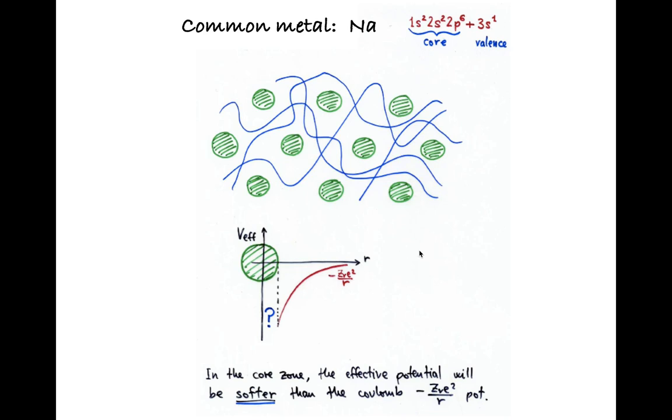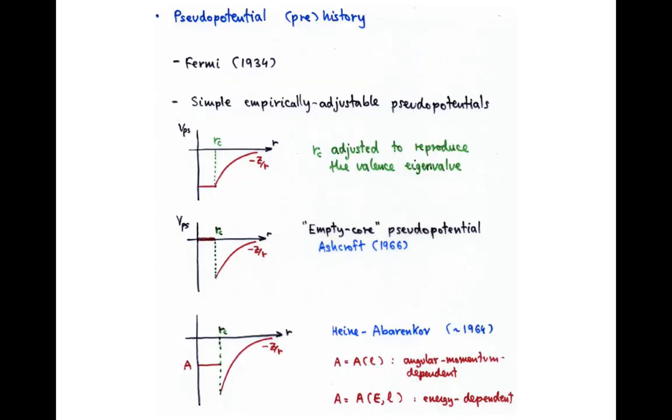What kind of effective potential? Well, you don't know in principle, but you can model it. Models for pseudopotentials date back already to Fermi and Hellmann in 1934, and really took off in the early 60s with the application of very simple models that could be fitted to experimental properties.